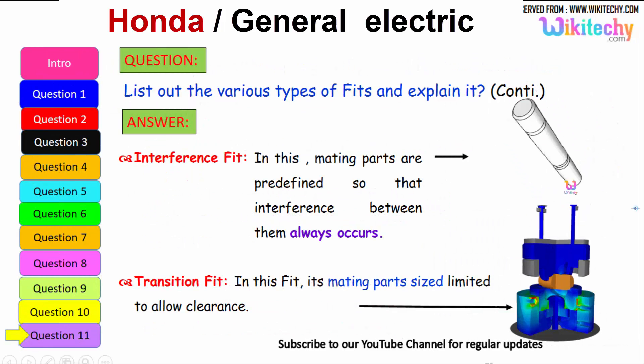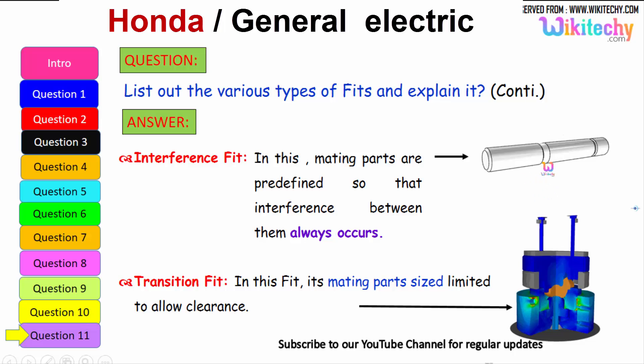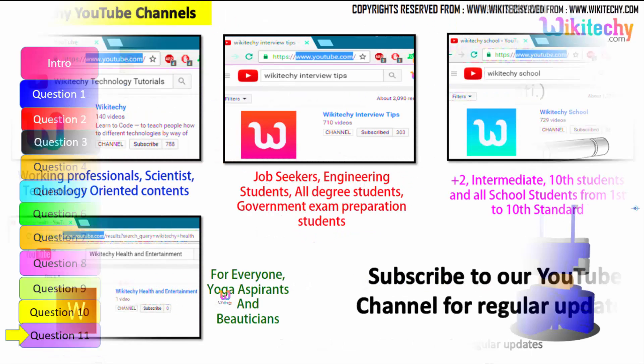If you talk about the interference fit, here is one which is connected to another. In this, the mating parts are predefined so that interference between them always occurs. The final transition fit: in this fit, mating parts size is limited to allow clearance. You should not have exact fitting so it may break. You can see the greenish one. That is your transition fit.